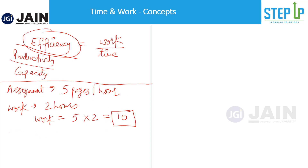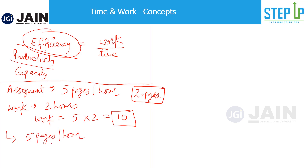How they will do it in the exam is they may add a few more variables. They may say it's a 20-page assignment that you have to do, and one of your really good friends comes along and says they're going to help you, and let's say the speed of that person is also five pages per hour. Now they will ask: in how many hours will you both working together be able to finish the work? Your speed is five plus your friend's efficiency is also five — that means you will be able to do 10 pages per hour. So how much time will you take to complete the assignment? That would be 20 — total work — divided by 10, which is two hours.